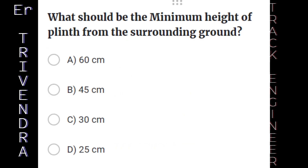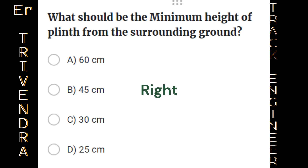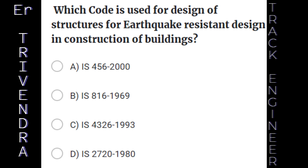What should be the minimum height of plinth from the surrounding ground? A. 60 centimeters. B. 45 centimeters. C. 30 centimeters. D. 25 centimeters. The right answer is: 45 centimeters.